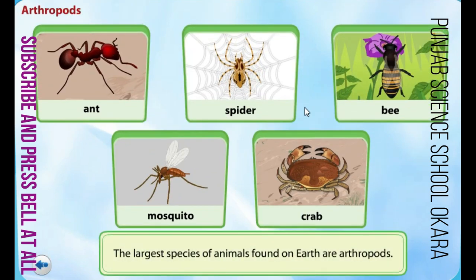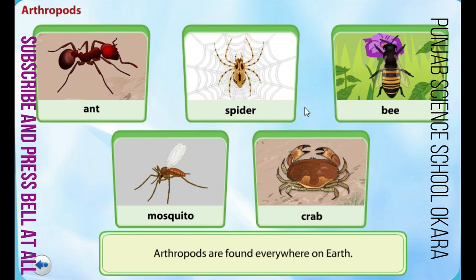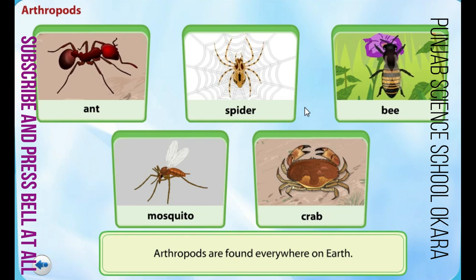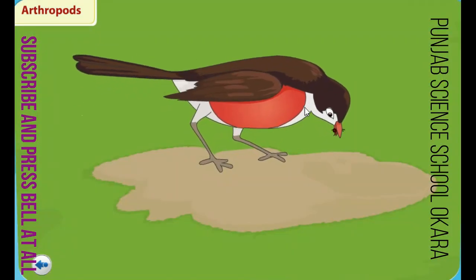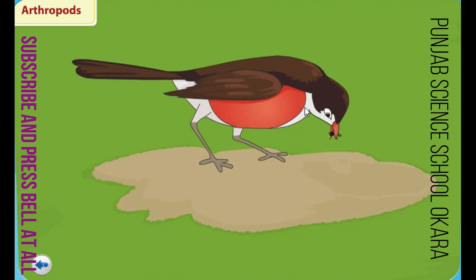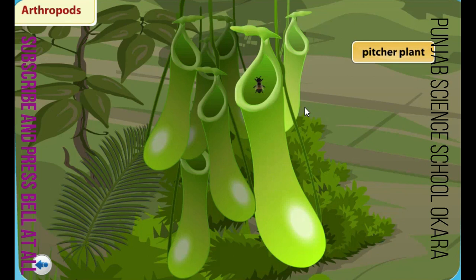The largest species of animals found on earth are arthropods. Arthropods are found everywhere on earth — they live on land, water, trees, and even underground. Arthropods are a major source of food for birds, mammals, and even some larger arthropods.